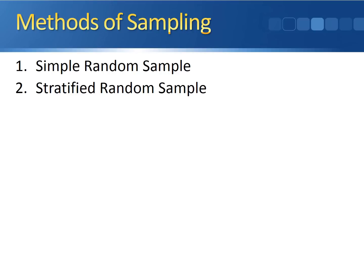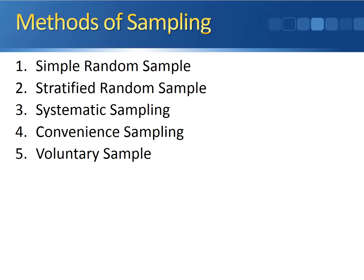The five we're going to focus on are a simple random sample, a stratified random sample, systematic sampling, convenience sampling, and a voluntary sample.